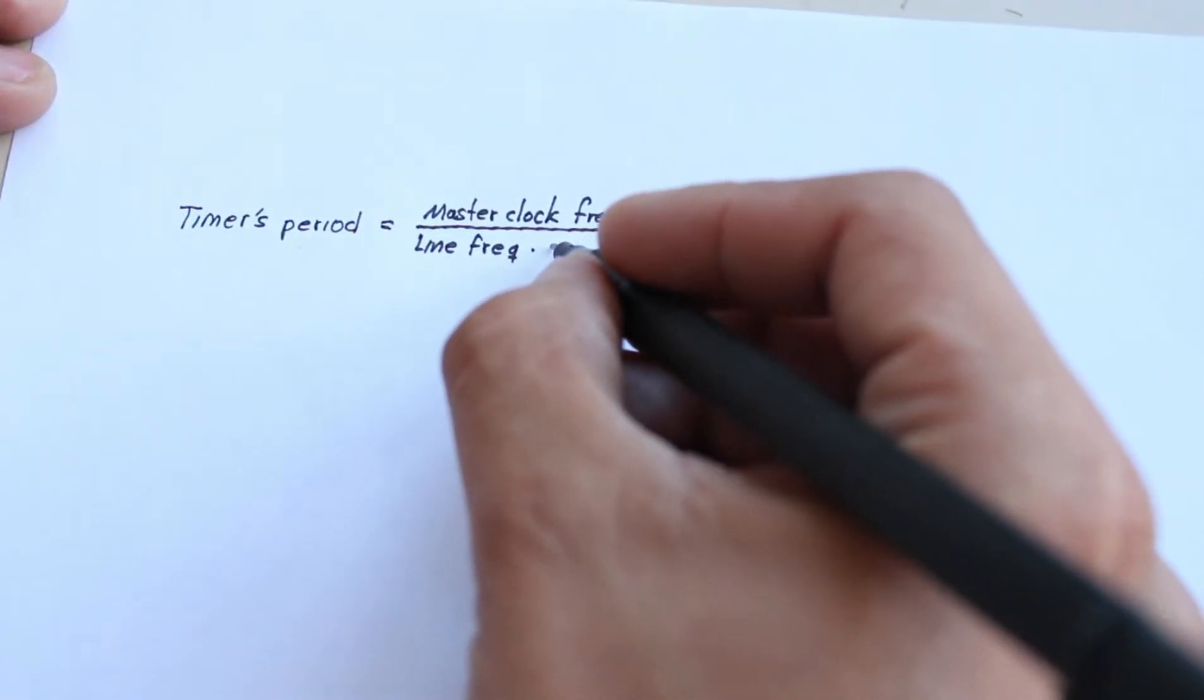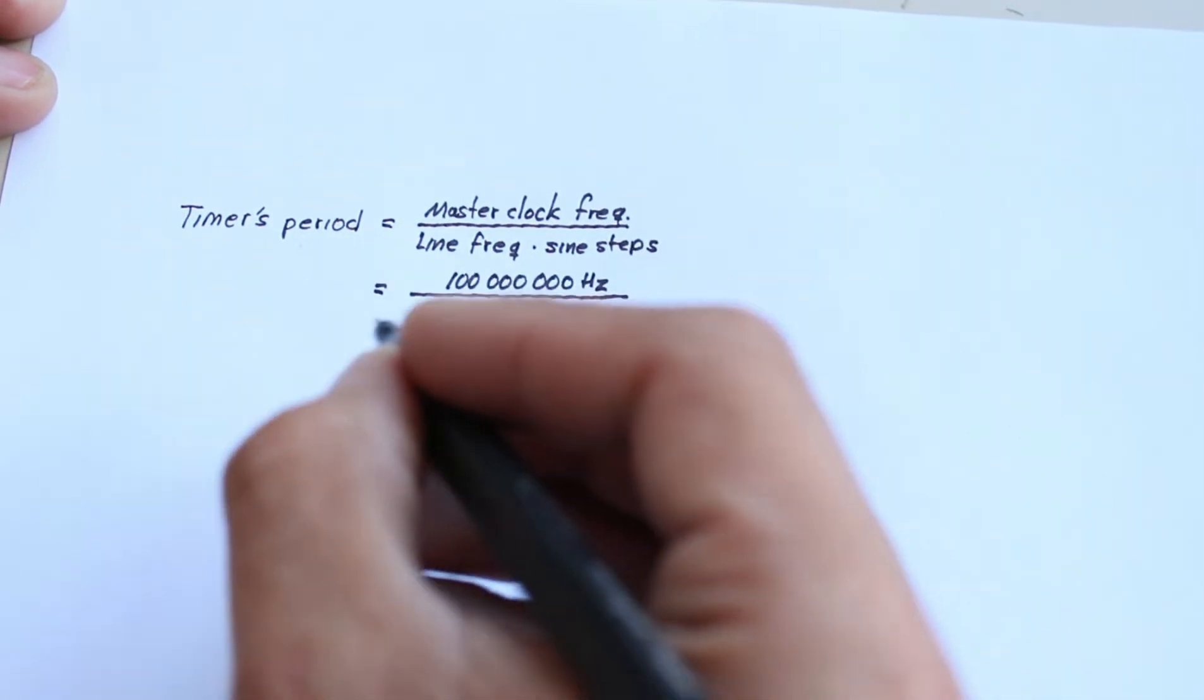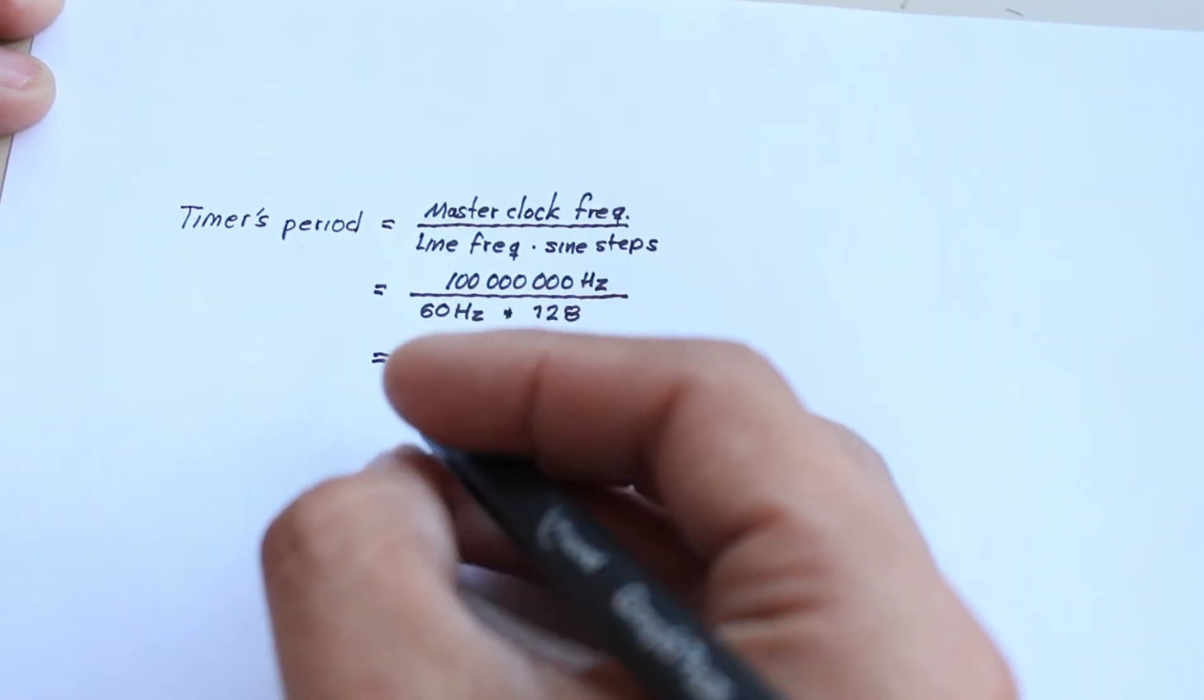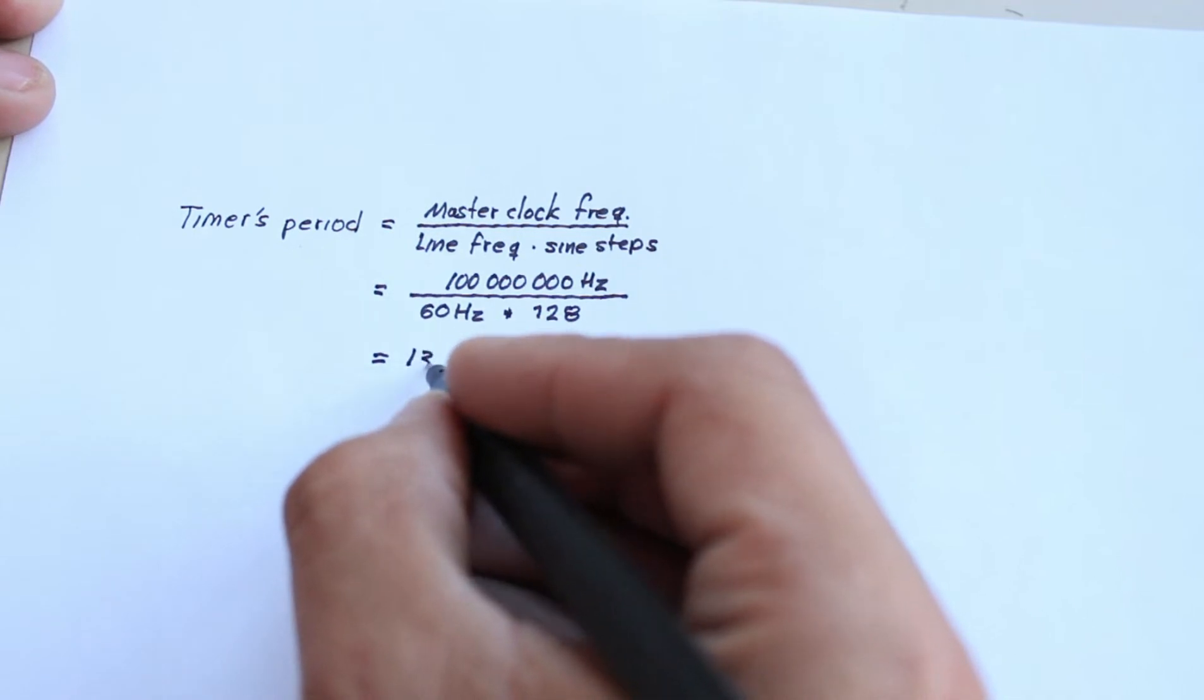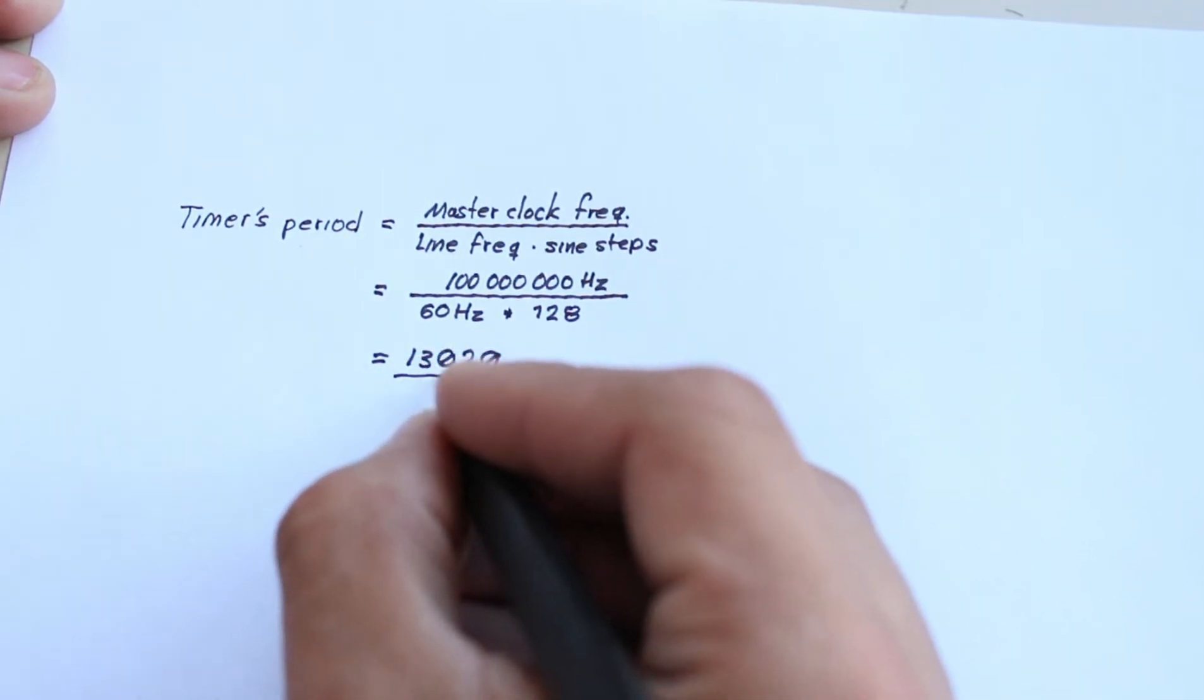To answer those questions, first we have to compute the number of ticks per sine step with the following formula. I divide the master clock frequency by the product of the line frequency per the number of sine steps. The operation results in 13,020.